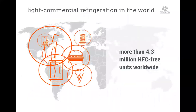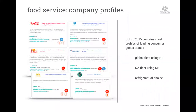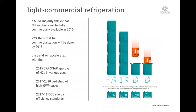At the global level, more than 4.3 million HFC-free units are running worldwide. As a new item in the guide, we put out short profiles of leading consumer goods brands — Coca-Cola, Starbucks, McDonald's, Unilever, Red Bull, and PepsiCo — outlining their global and North American fleet using natural refrigerants. Survey results show that more than 50% believe natural refrigerant solutions will be fully commercially available from next year onwards, and 90-plus percent think full commercialization will be achieved within the next three years. The trend will accelerate with EPA SNAP approval of hydrocarbons, the delisting of HFCs, and DOE energy efficiency standards.